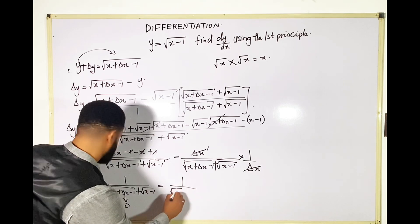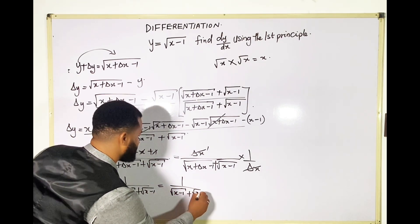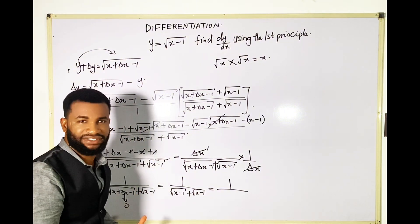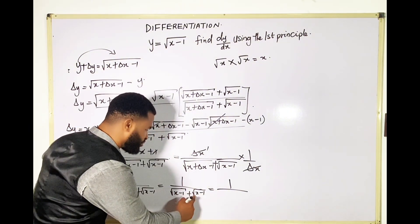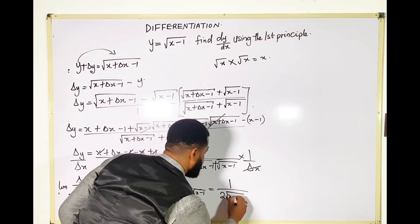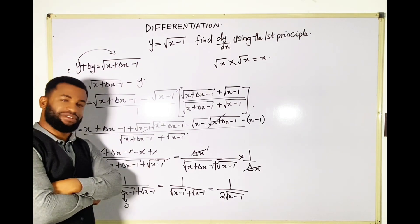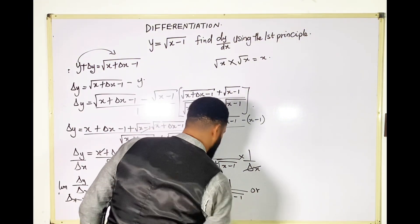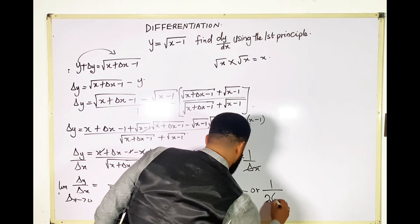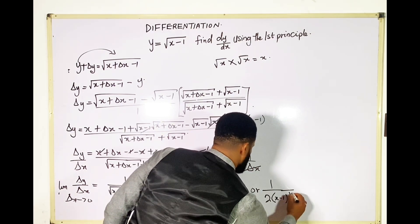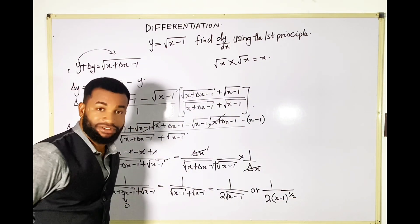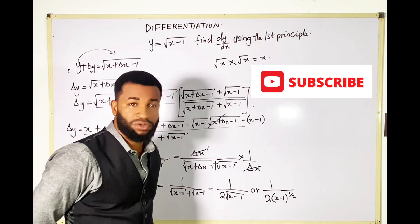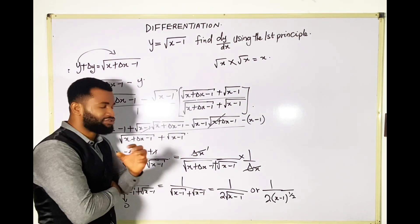As Δx tends to zero, the Δx inside the root becomes zero, giving me 1 over root (x − 1) plus root (x − 1). Since root (x − 1) plus root (x − 1) equals 2 root (x − 1), the answer is 1 over 2 root (x − 1). Another way to write this is 1 over 2(x − 1) to the power of one half. Ladies and gentlemen, please don't forget to share this video, like, and subscribe.